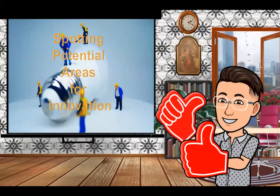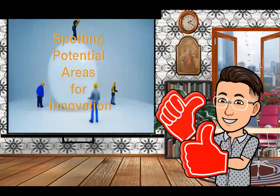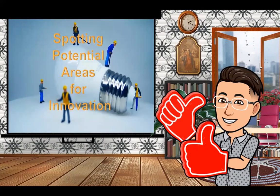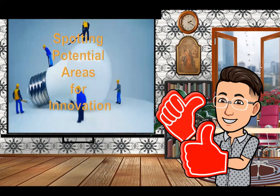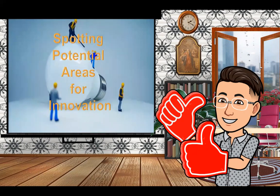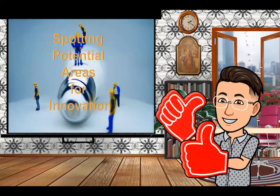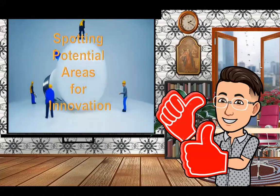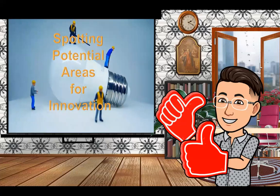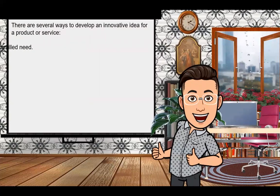Next, let's talk about spotting potential areas for innovation. There are several ways to develop an innovative idea. Cooking up innovative ideas is very difficult, so the task becomes easier by first identifying potential areas where innovation can happen. The first potential area is filling an unfilled need — these are customer demands not yet fully satisfied, probably because of lack of supply or a limited number of suppliers. Next are areas for improvement — have existing products and services retained the same formula for too long?